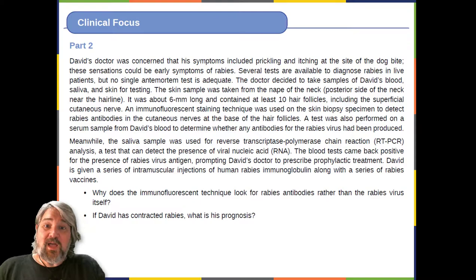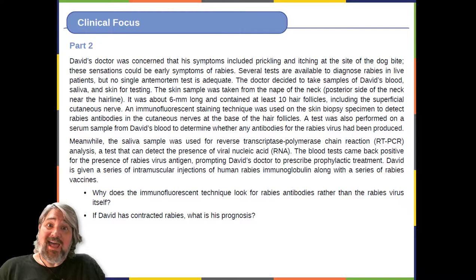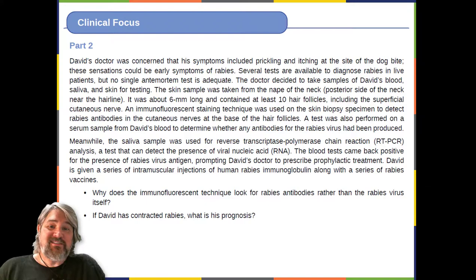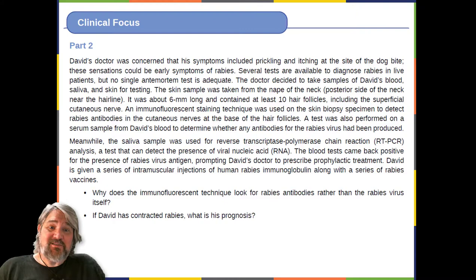A test was also performed on a serum sample from David's blood to determine whether any antibodies from the rabies virus had been produced. The saliva sample was used for reverse transcriptase polymerase chain reaction, RT-PCR analysis, a test that can detect the presence of viral nucleic acids—RNA. The blood tests came back positive for the presence of rabies virus antigen, prompting David's doctor to prescribe prophylactic treatment: a series of intramuscular injections of human rabies immunoglobulin along with a series of rabies vaccines. Why does the immunofluorescent technique look for rabies antibodies rather than the rabies virus itself? If David has contracted rabies, what is his prognosis?